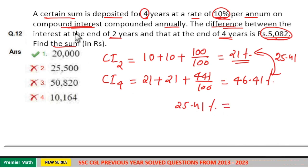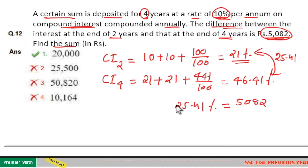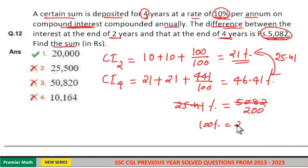2 year compound interest difference, which is given in the question 5,082. 25.41 into 2 is equal to 50.82. So 25.41 into 200 is 5,082, which means 100 percentage is equal to 20,000. So option 1 is your answer.